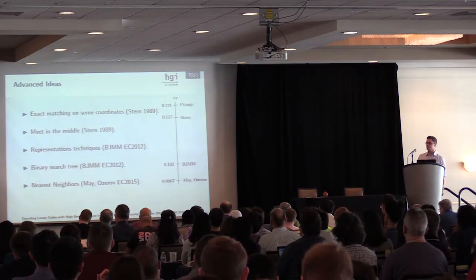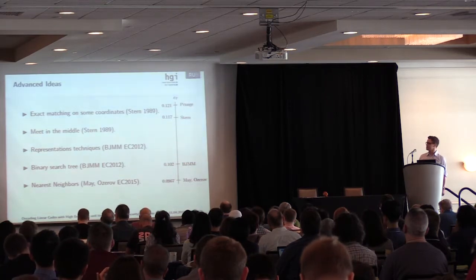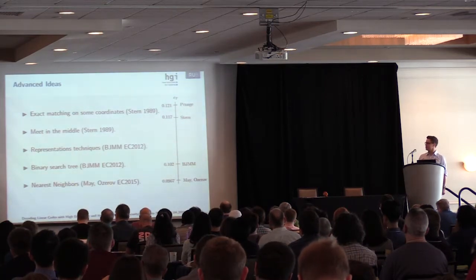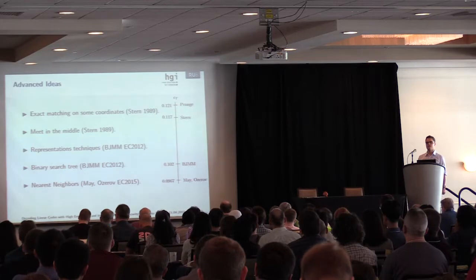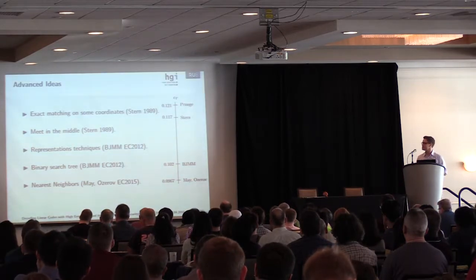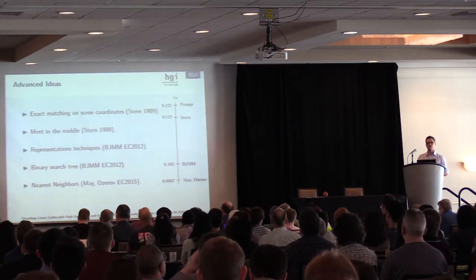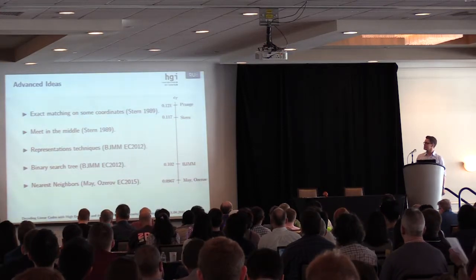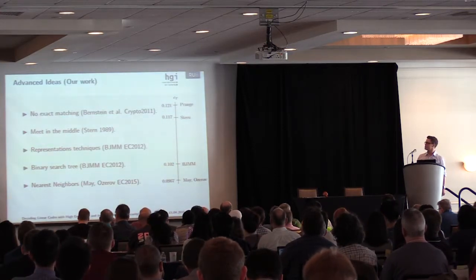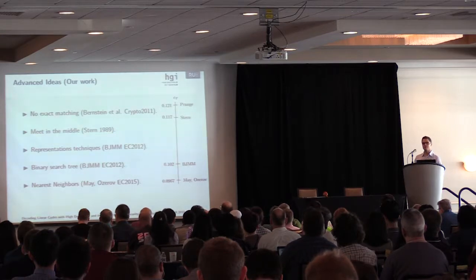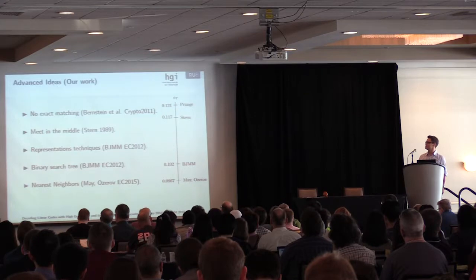Then comes the famous BJMM, which added representation techniques, which are already known for subset sum problems, and which also constructs the target vector in a binary search tree fashion. The last step was the application of nearest neighbor search by May and Meurer. Our algorithm uses those ideas, except the first one. We skip this and we don't have any exact matching.